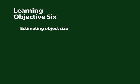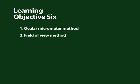There are two methods for calculating sizes of objects: one, the ocular micrometer method and two, measurement of the field of view method.